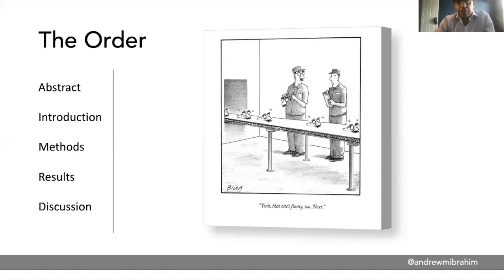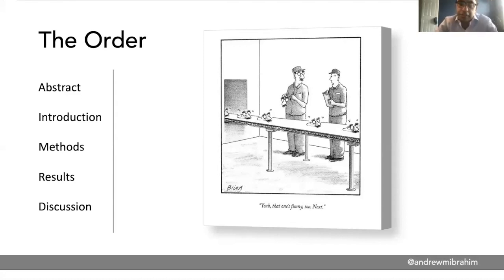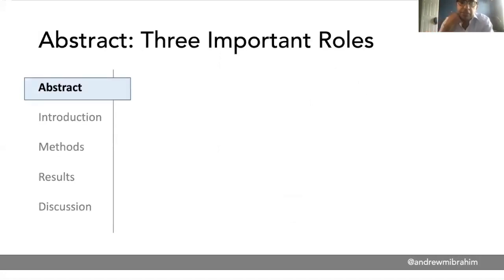Research papers have an order. Typically the abstract is at the front, then there's an introduction, methods, results, and a discussion. Each journal has their own variation of that theme, but the key is to keep things in order — what's supposed to be in the introduction stays there, what's in the results stays there, and you don't jump around. It's similar to when you're presenting patients and you start giving lab values before telling us the subjective stuff.